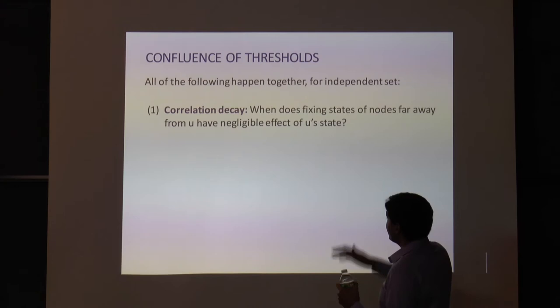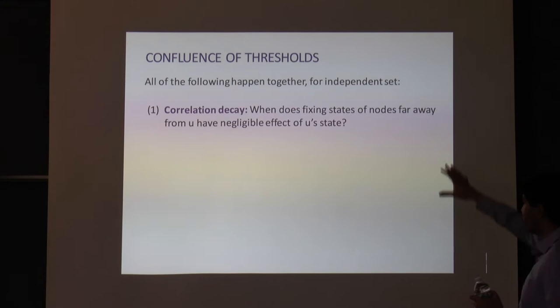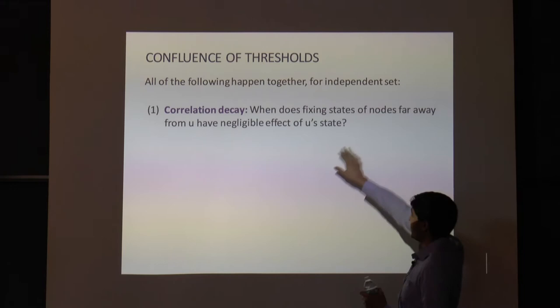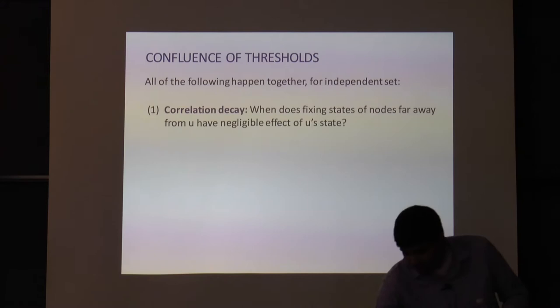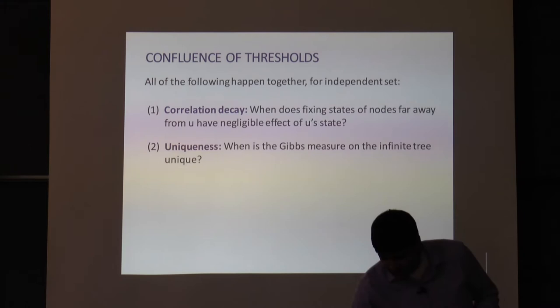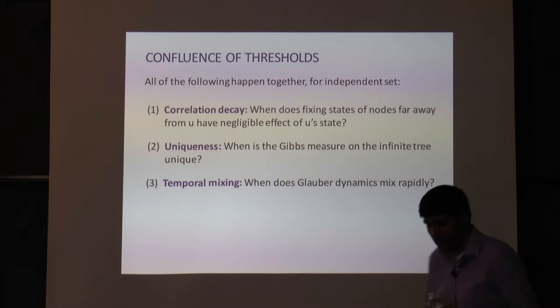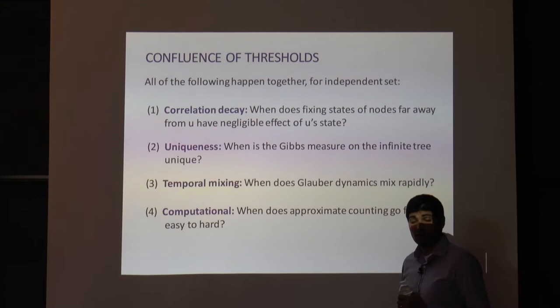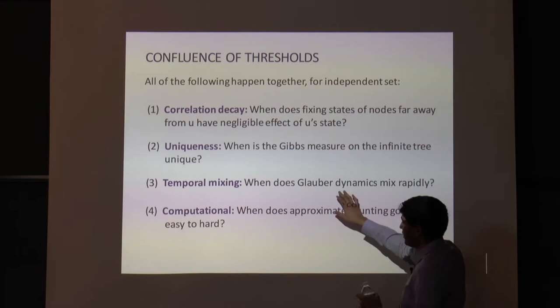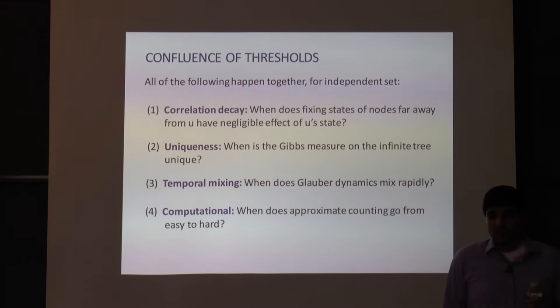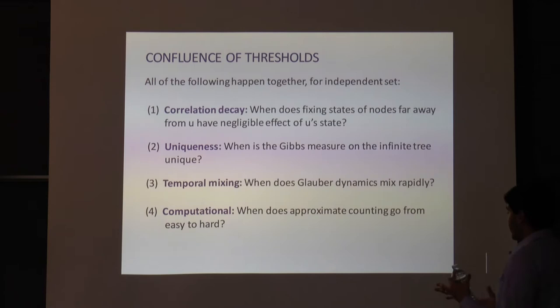To summarize: for problems we understand, we understand very well — so thoroughly that we see them from many different vantage points giving the same answer. For sampling independent sets in the hardcore model, all these thresholds coincide: correlation decay, uniqueness of the Gibbs measure on infinite trees, temporal mixing of Glauber dynamics in polynomial time, and the computational threshold from Sly and Weitz's work. The problem is fundamentally computationally hard beyond that threshold.